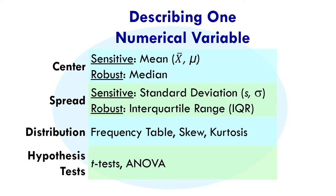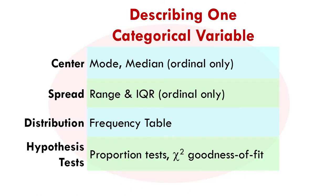Let's flashback quickly and get our bearings. We've learned to describe one numerical variable — descriptive procedures and statistics. We learned to describe the center, the spread, and we learned graphs and tables to describe the distribution of a single numerical variable. We have hypothesis tests for a single numerical variable, sometimes broken down by another categorical variable. And we have a description of a categorical variable.